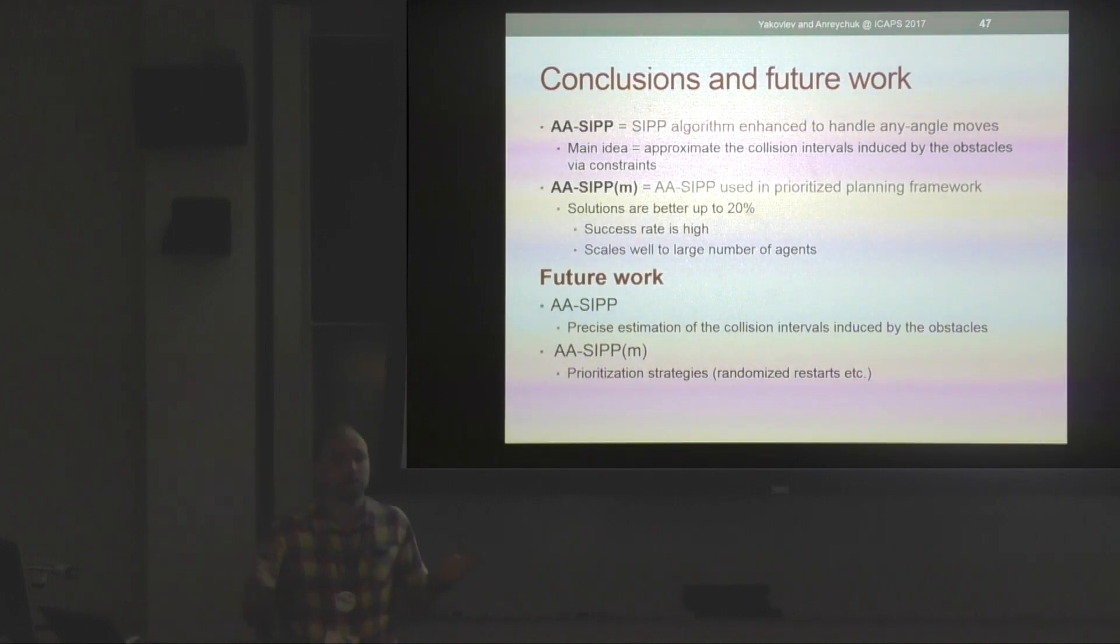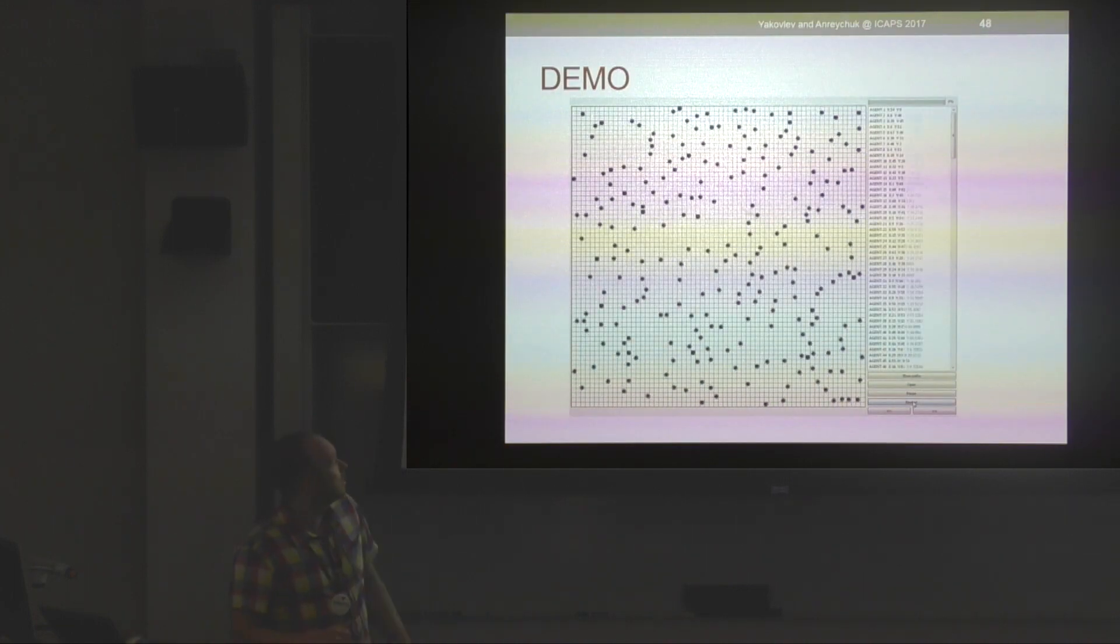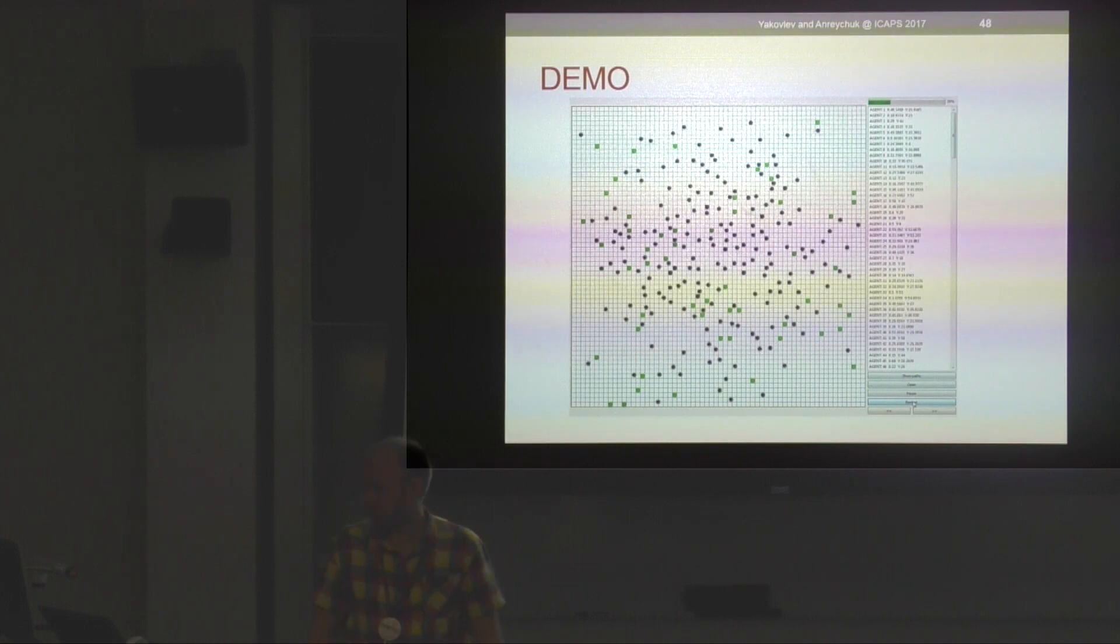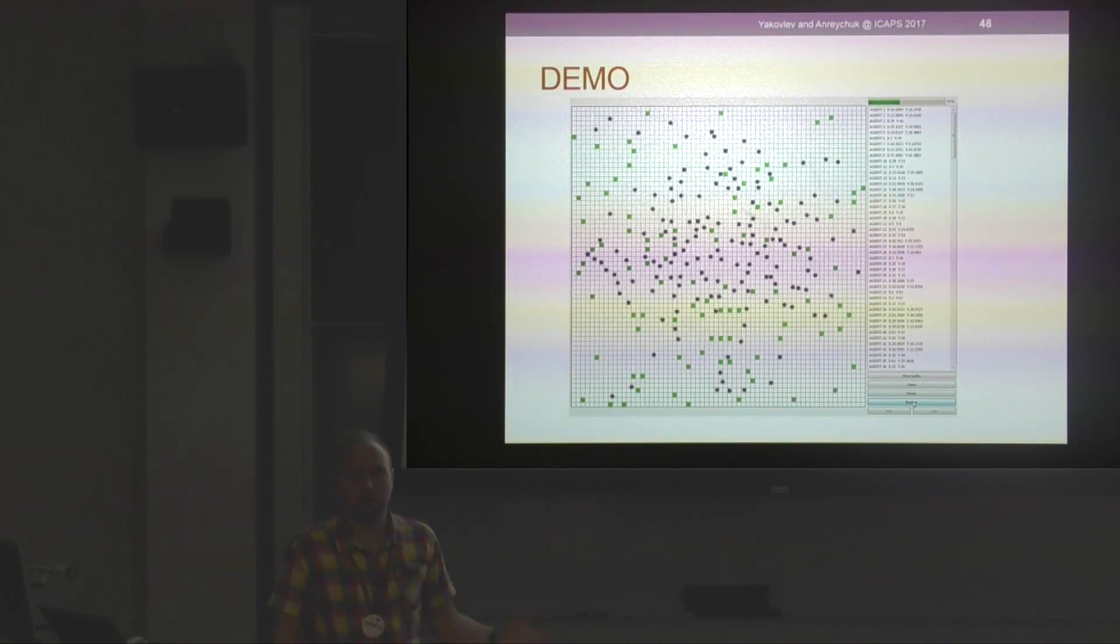That concludes my talk. The main point is that we definitely need to look at those any-angle moves and any-angle paths when we're solving grid-based multi-agent pathfinding problems, because although it can be tricky, it really pays off. We get much better solutions. We plan to continue enhancing the algorithm, and if anybody wants to take part in it, you're welcome. Let's collaborate and do it together. Here is the demo: they all follow any-angle paths on a grid. That's my talk.